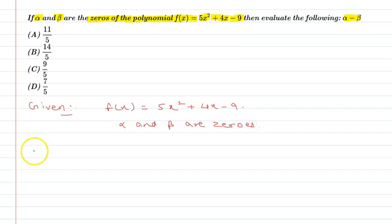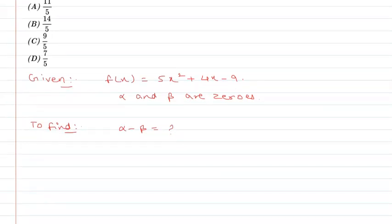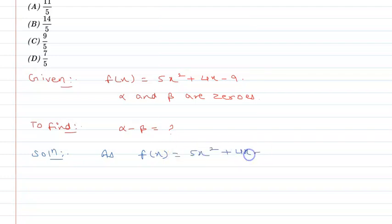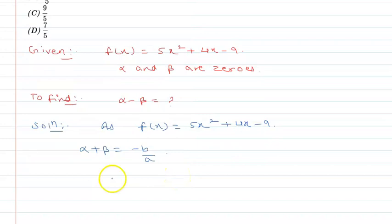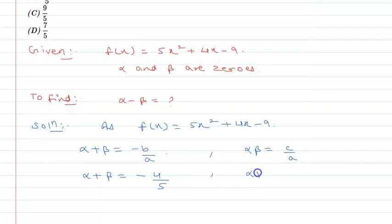We need to find alpha minus beta. Now, for the polynomial f(x) = 5x squared plus 4x minus 9, I know that alpha plus beta is equal to minus b upon a, where b is the coefficient of x and a is the coefficient of x squared. So alpha plus beta is equal to minus 4 upon 5. And alpha into beta equals c upon a, where c is the constant. So alpha into beta will be minus 9 upon 5.